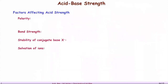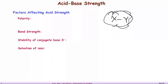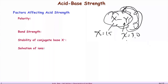What determines the strength of acids? We have to look at polarity — how distorted the electron cloud is. If you have two atoms sharing an electron cloud, and one has a stronger electronegativity (chi), it will draw the electron cloud toward itself. The polarity points toward the more electronegative element, which affects acid-base strength. Bond strength — the strength of the bond between two atoms — is also critical.